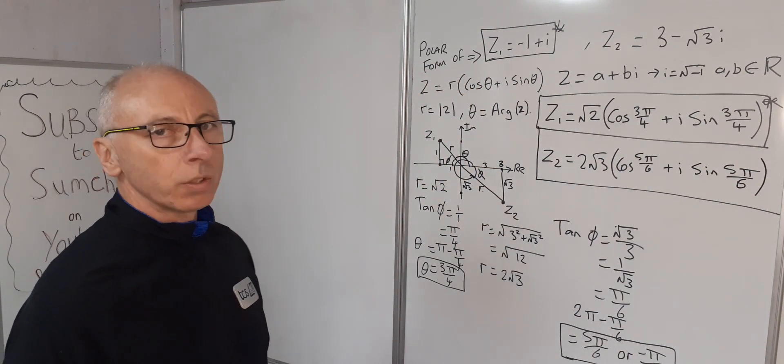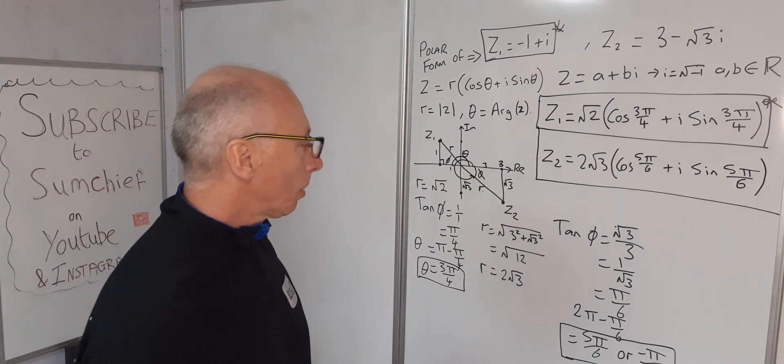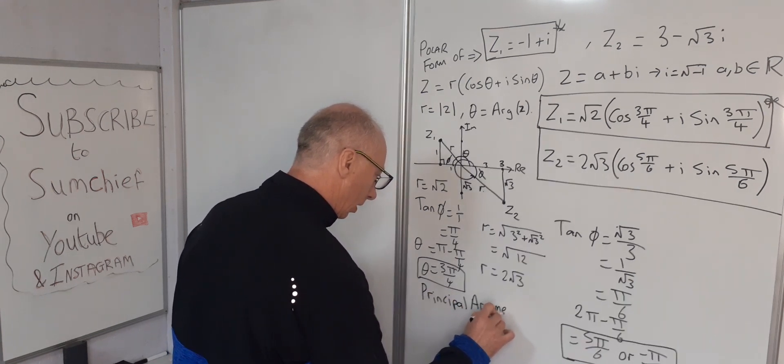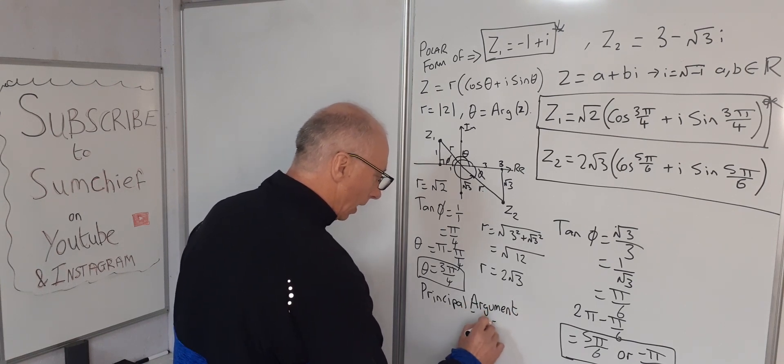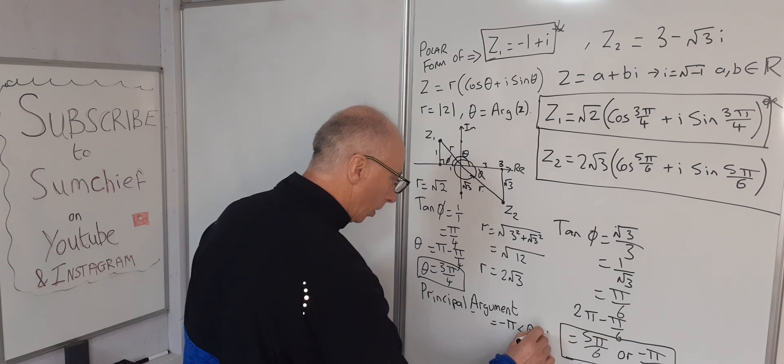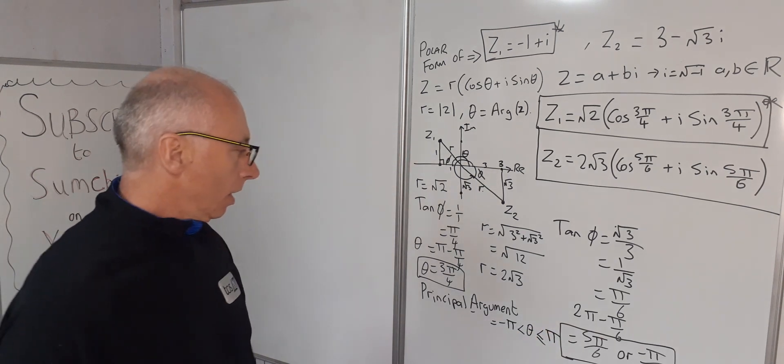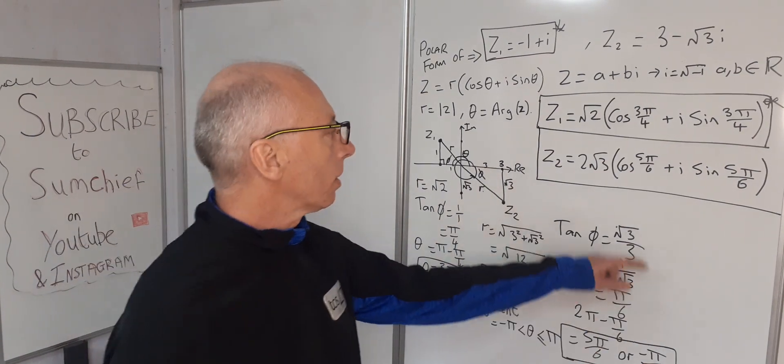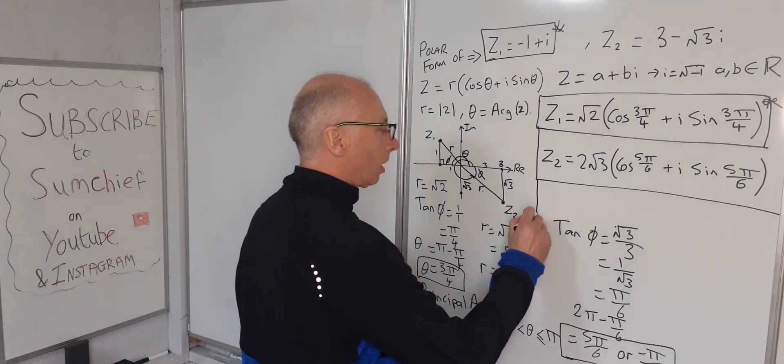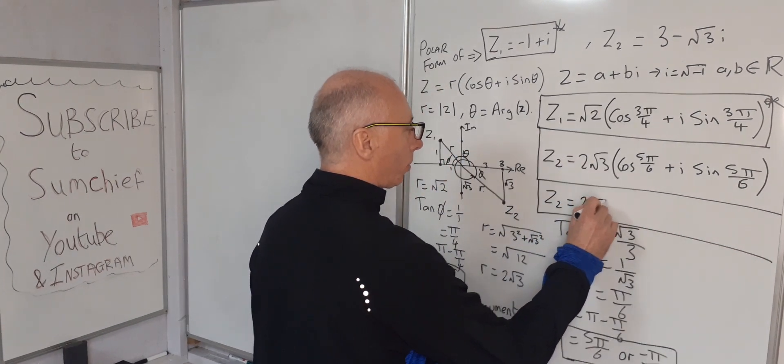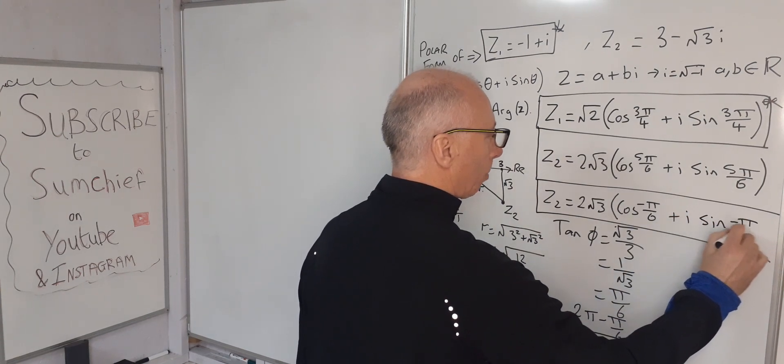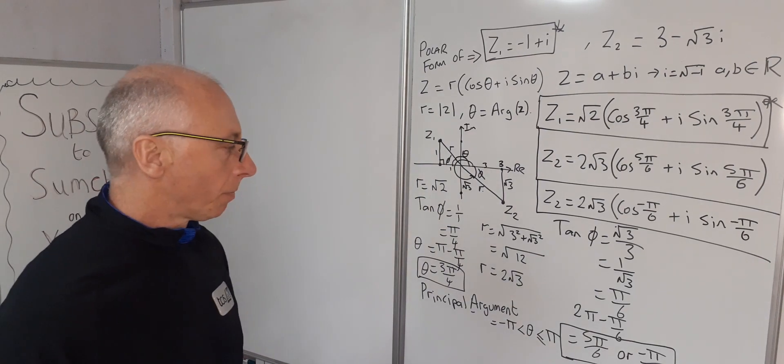One extra thing at the end: we could go for the principle argument. The principle argument, capital A, is in between -π < θ ≤ π. For the principle argument, you'd pick -π/6. So we could also say z₂ = 2√3(cos(-π/6) + i sin(-π/6)). That's if you wanted to go for the principle argument.